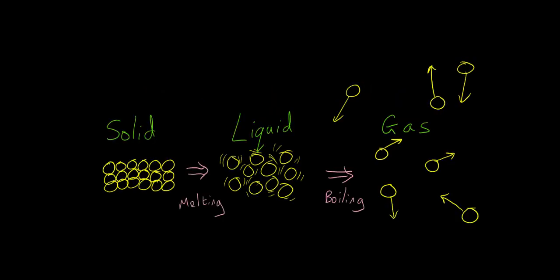When a substance is changing phase from a solid to a liquid or from a liquid to a gas, energy is being used to break the bonds between the molecules. This energy is stored in the substance as potential energy — that is, energy that might be released when the phase change is later reversed. This hidden heat is known as latent heat.